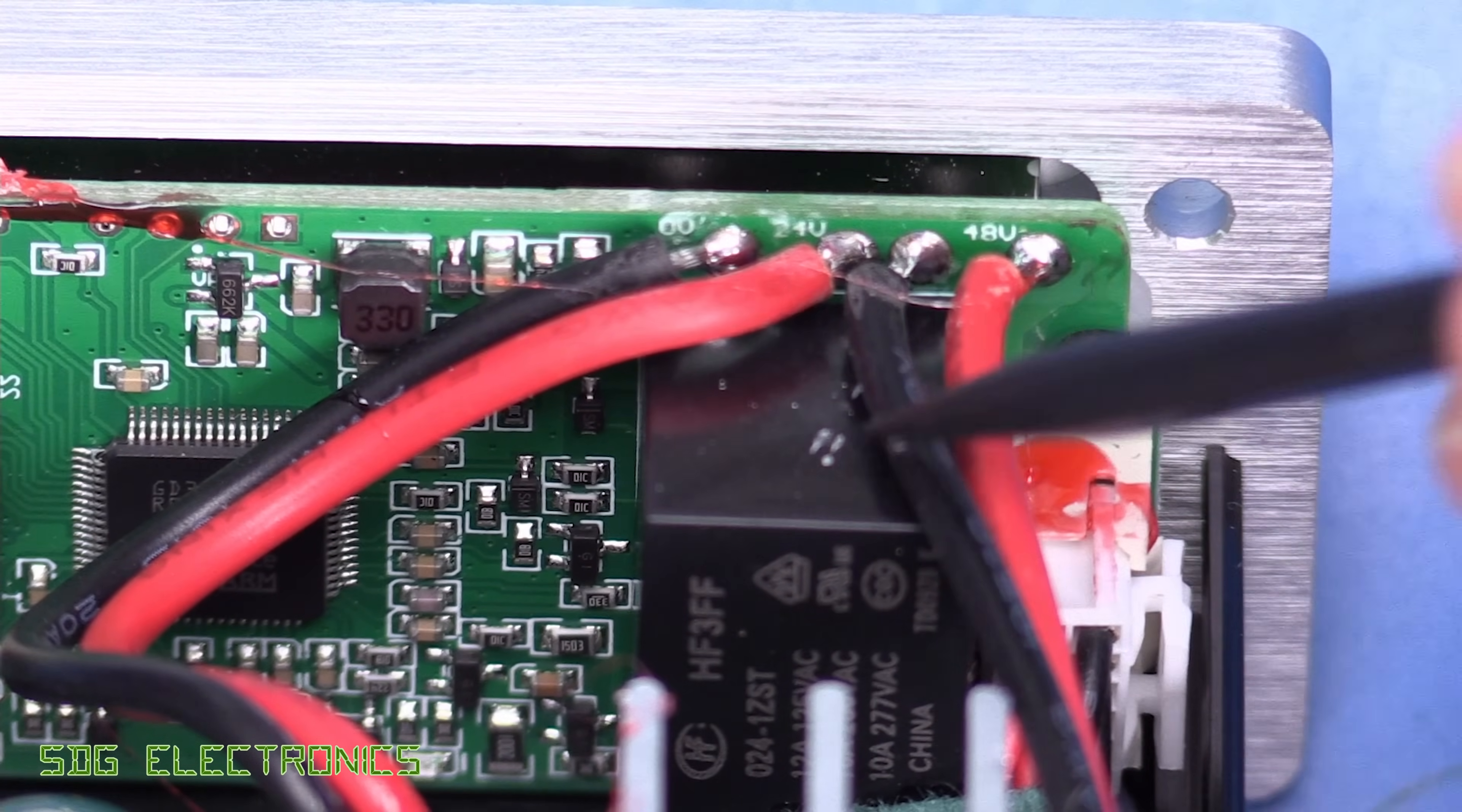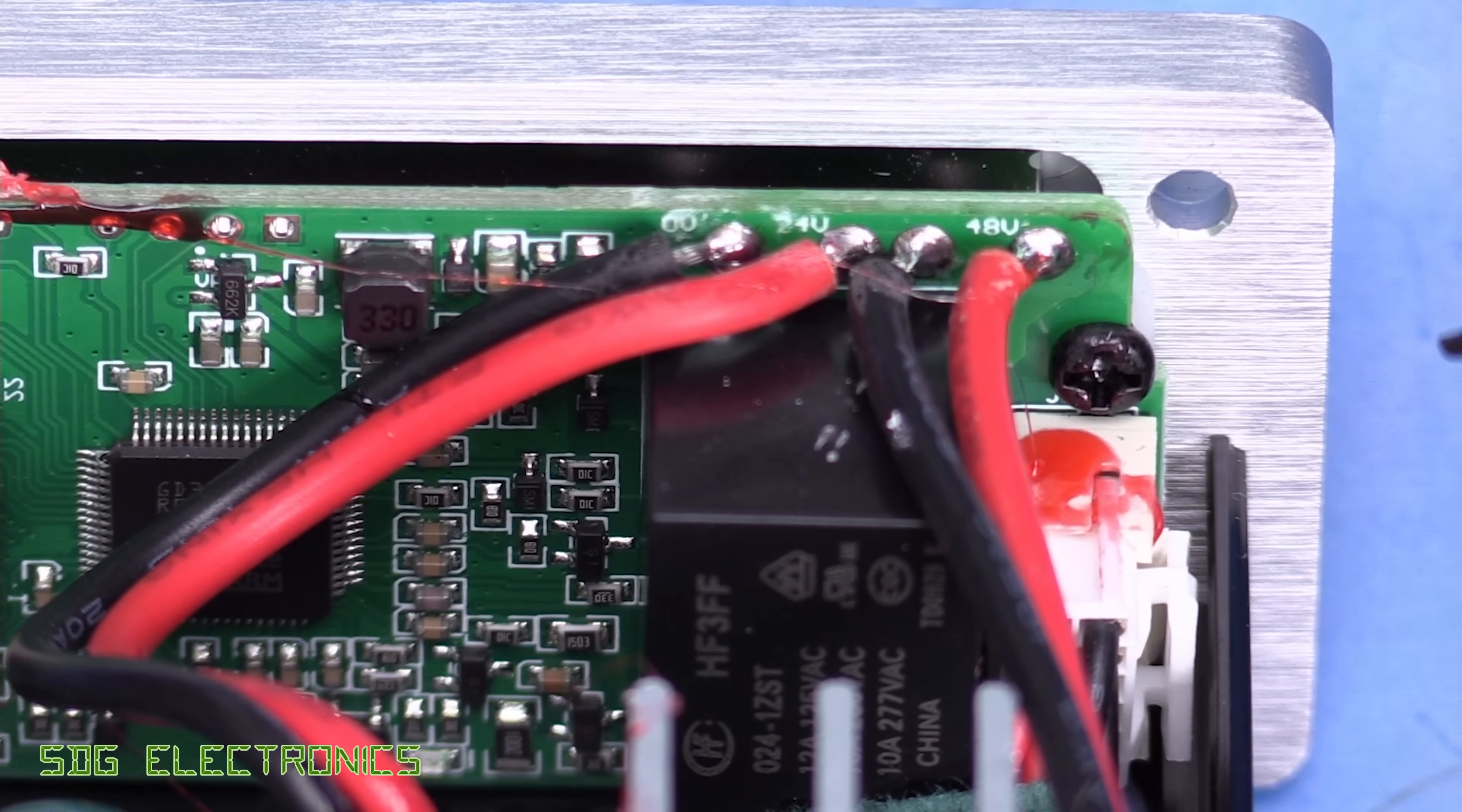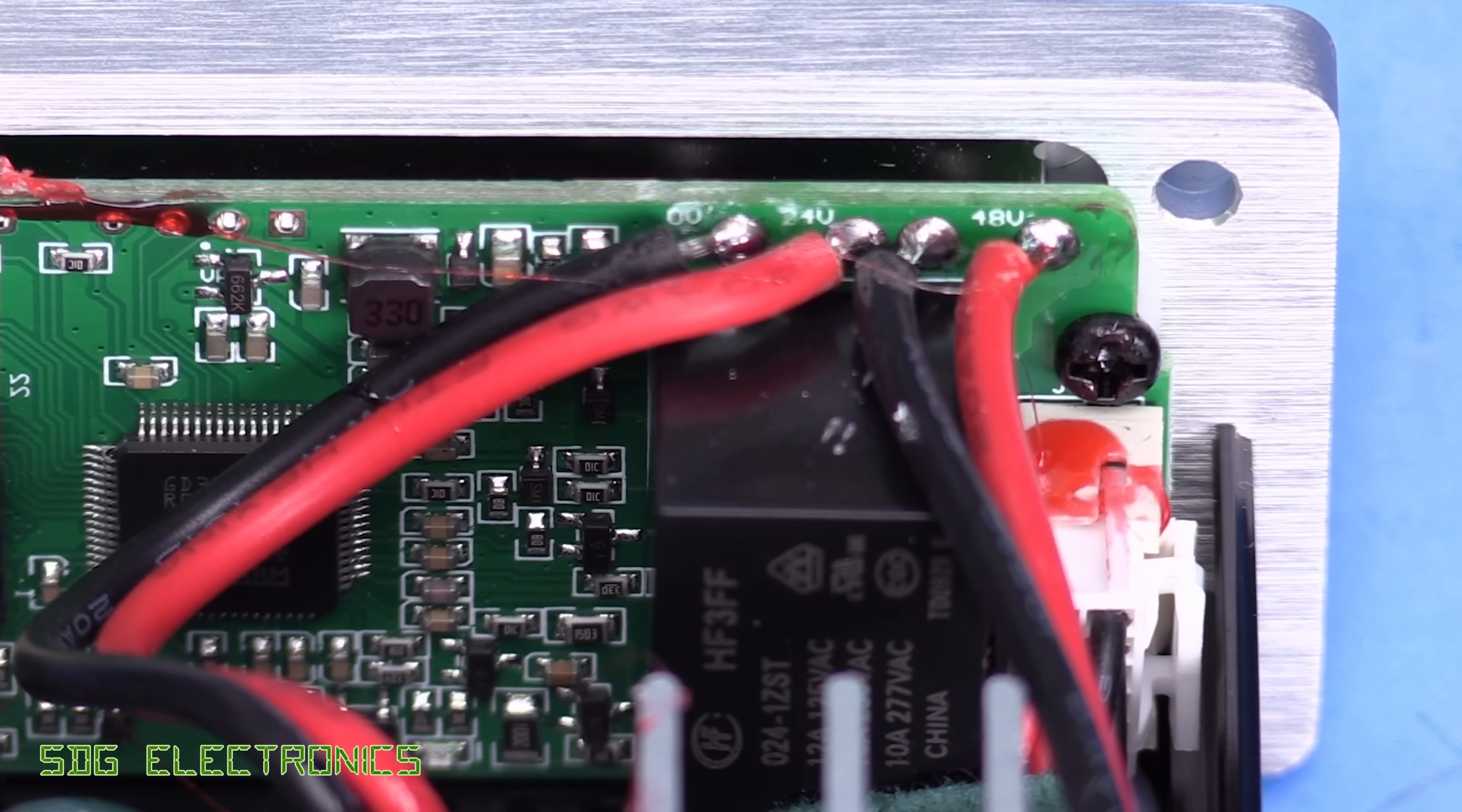So yeah, like I said, I think this relay is switching in a second power supply to connect it in series so that we can drive the high power C470 cartridge.